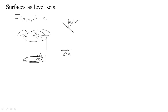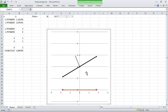We can actually determine the area of the shadow if we just know the angle between the normal to the surface and the direction that we projected down. We'll call this vector P, and the normal — if you have a function defined as a level set — can just be found from the gradient. We take gradient F and that finds a normal because the normal is always perpendicular to the level set.